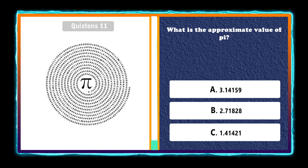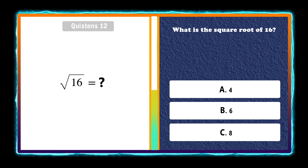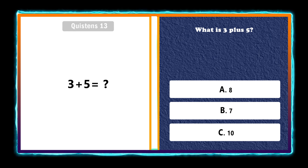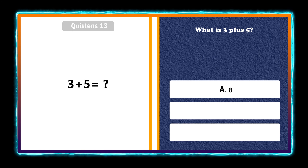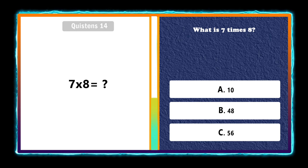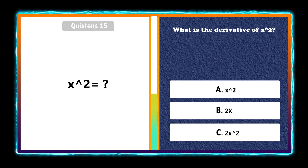Part 2, Mathematics topic. What is the approximate value of pi? What is the square root of 16? What is the derivative of x squared? Eight. 2x.